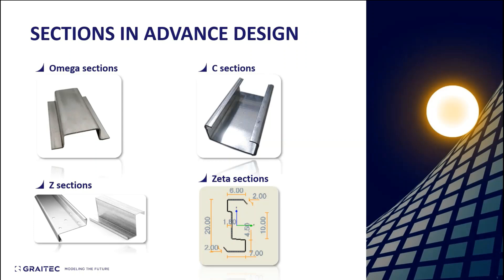With the latest 2023 release, you can now define almost any type of section — omega, C, Z, zeta, or sigma — with your own parameters, sizes, and thicknesses. Previously only a few user-defined sections were available, but this has been significantly expanded. You can carry your custom section through to full design in Advanced Design 2023.